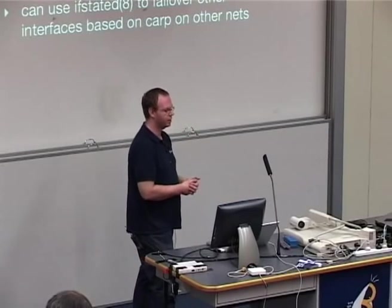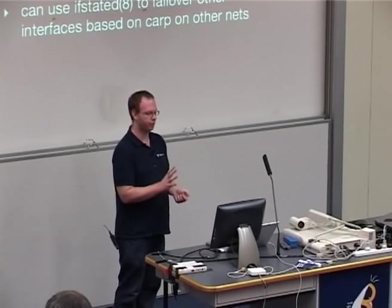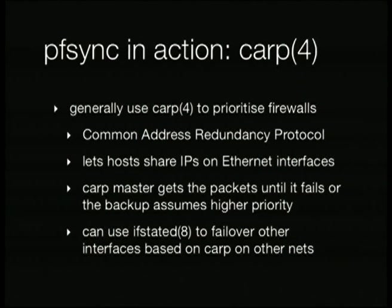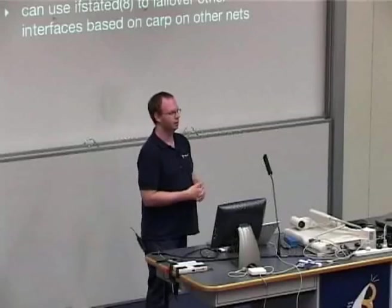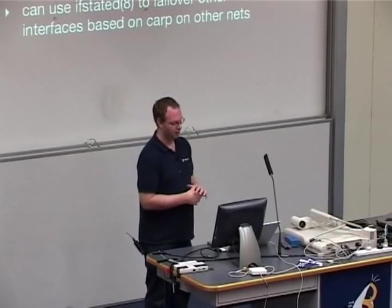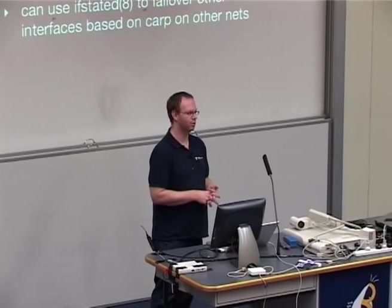PFSync doesn't actually do anything about prioritizing the firewall — you have to use another mechanism for that, usually CARP. Is anyone familiar with HSRP on Cisco? It's basically that, but we made our own because there are no patent issues and it's simpler. CARP is a virtual interface you build on top of an Ethernet interface. The master broadcasts its state to the network, and all the backup peers wait until the broadcasts from the master stop, and then take over. There's also VRRP but it has patent issues — CARP is good enough for us.